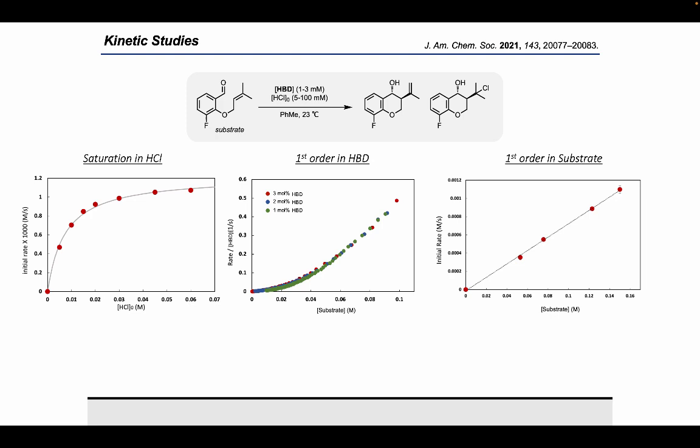Taken together, these data serve to establish the kinetic relevance of the H-bond donor HCl complex that we talked about previously, and we can now define the stoichiometry of the rate-limiting transition state. In this case, the rate-limiting transition state features a one-to-one-to-one stoichiometry of hydrogen bond donor, HCl, and substrate.